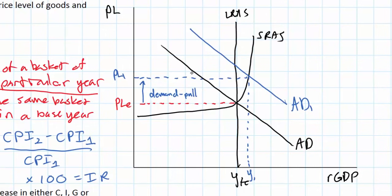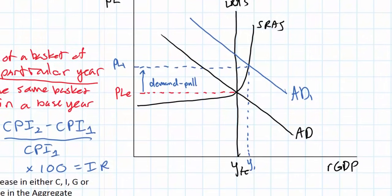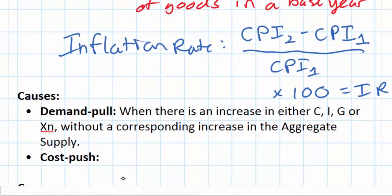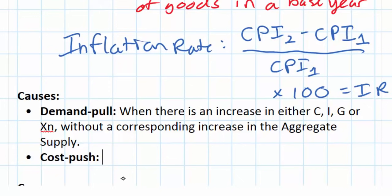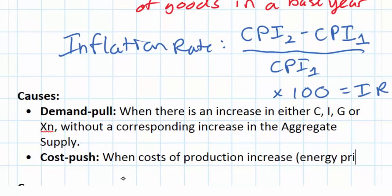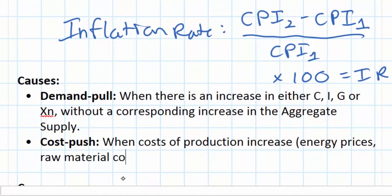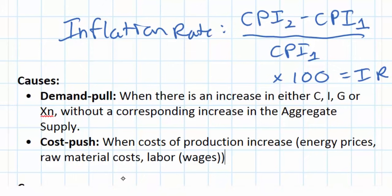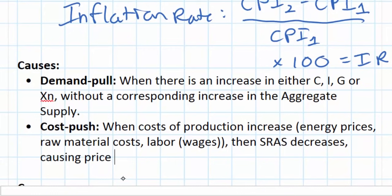In macroeconomics, an increase in demand without a corresponding increase in aggregate supply causes demand pull inflation. That's one cause of inflation. Another cause is what we call cost push inflation. When costs of production increase in a nation — this could be energy prices, raw material costs, or labor prices (wages) — if any of these costs increase, then SRAS, the short run aggregate supply, decreases, causing price levels to rise and the quantity of output demanded to decrease.